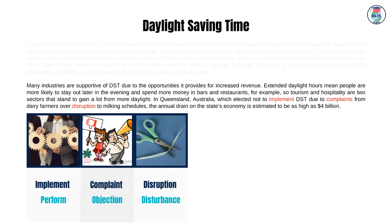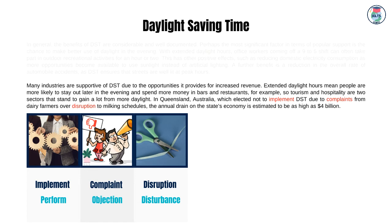Many industries are supportive of DST due to the opportunities it provides for increased revenue. Extended daylight hours mean people are more likely to stay out later in the evening and spend more money in bars and restaurants, for example, so tourism and hospitality are two sectors that stand to gain a lot from more daylight. In Queensland, Australia, which elected not to implement DST due to complaints from dairy farmers over disruption to milking schedules, the annual drain on the state's economy is estimated to be as high as $4 billion.